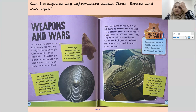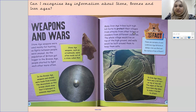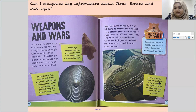Many Iron Age tribes built high hill forts to protect their villages from attacks from other tribes or invaders from different countries. The whole village would live on top of high ground and walls would be built around them to keep them safe. In Iron Age times there was a hill fort on top of a hill, and the edges of the hill were dug away to make it harder to attack. There are remains of over 3,000 Iron Age hill forts in Britain.